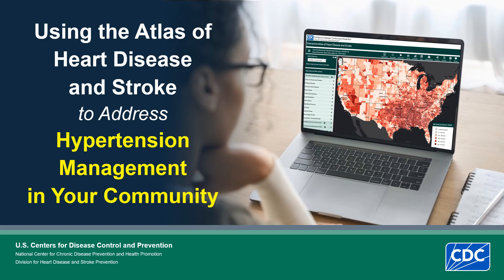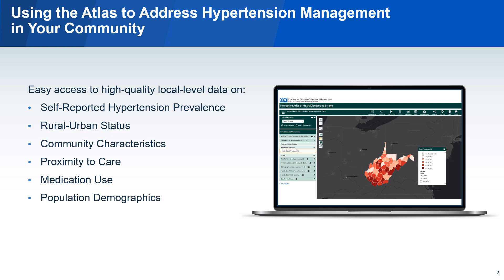In this presentation, we will walk through examples of how you can use the Atlas to improve hypertension management in your communities. For an overview of the Atlas or step-by-step instructions, go to www.cdc.gov and search Atlas of Heart Disease and Stroke. The Atlas provides easy access to a wide range of high-quality, local-level data. For this example, we'll be using data on self-reported hypertension prevalence — that is, adults who have been told by a health professional that they have high blood pressure — along with rural-urban status, community characteristics, proximity to care, medication use, and population demographics.